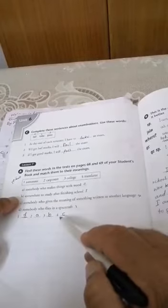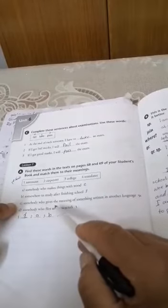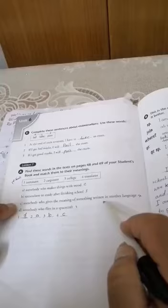And the last one, number four, a translator. C, somebody who gives the meaning of something written in another language.